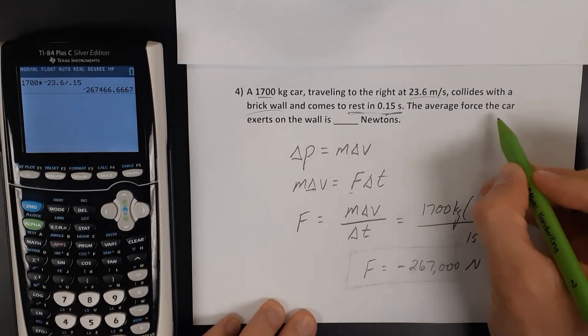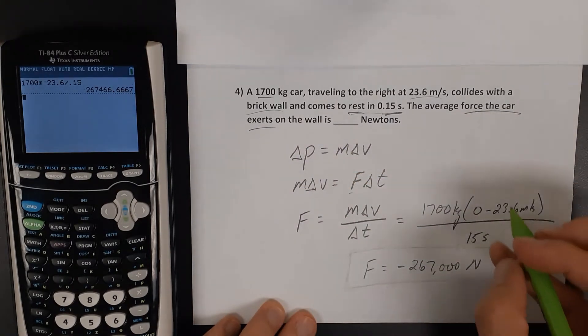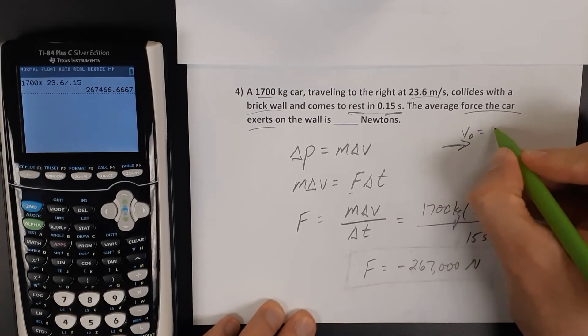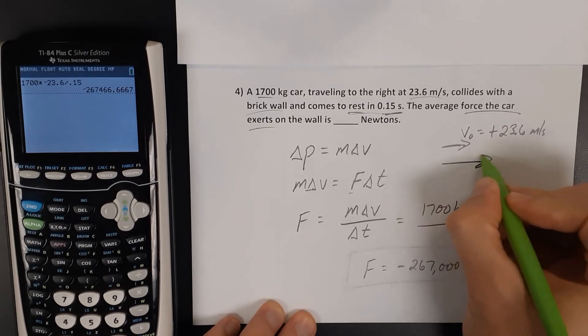The question asks, what is the force the car exerts onto the wall? If we're saying that the car is moving with an initial speed of positive 23.6, then when the car hits the wall, that force will be positive as well.